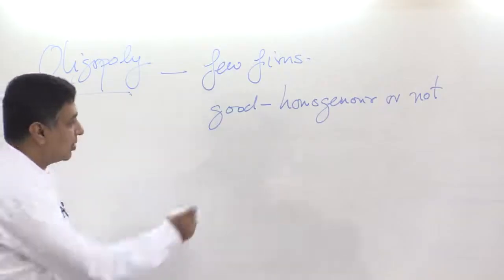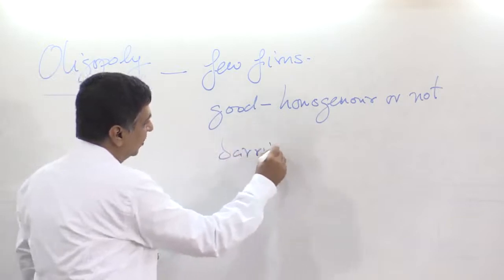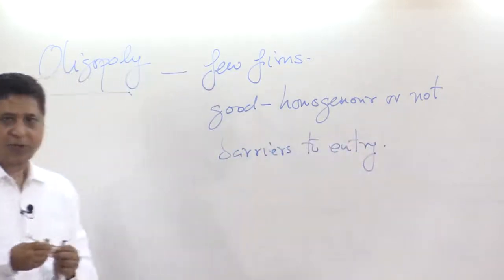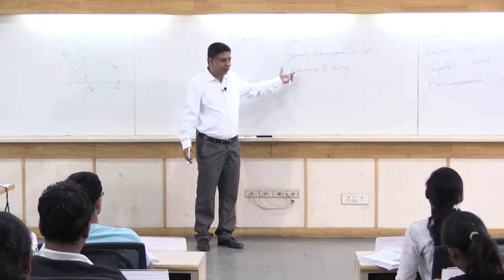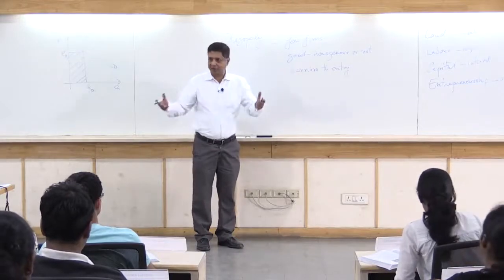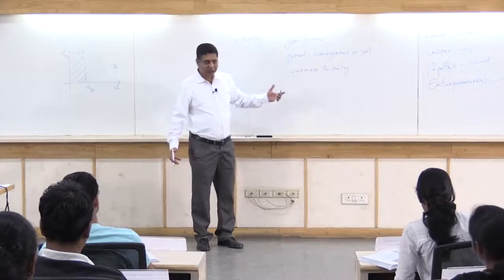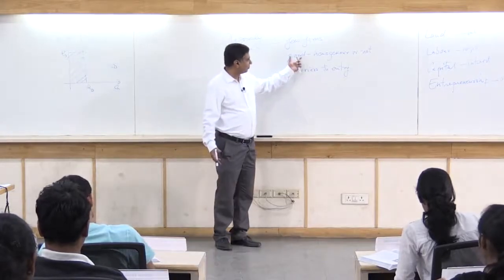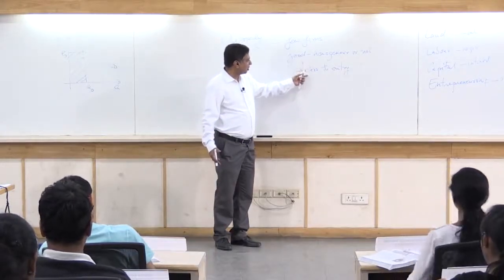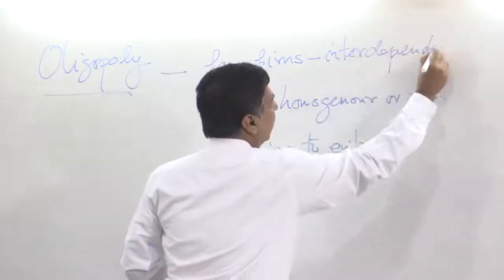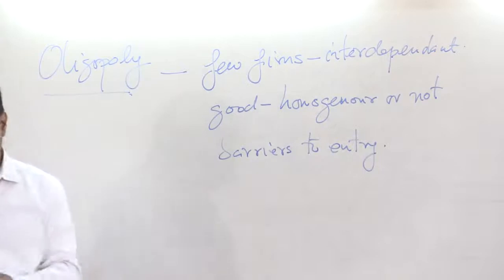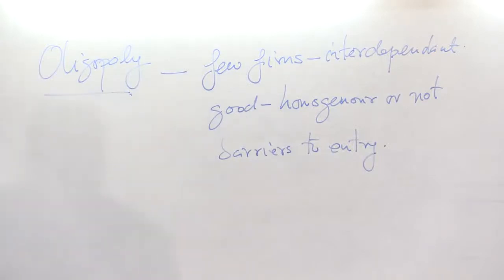Obviously, if there are a few firms, then there must be some barriers to entry. It is not like monopoly where there is just one firm, but there are few firms. It is difficult for new firms to come in. The good may be homogeneous or not, and few firms that are interdependent. That is how an oligopoly is.